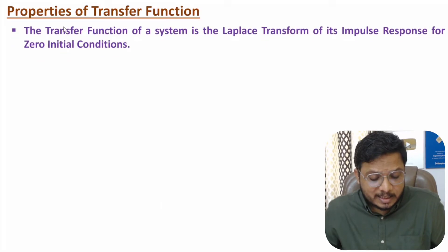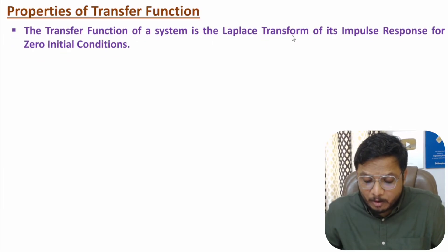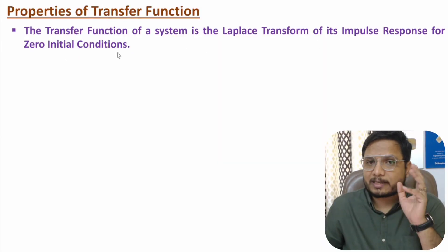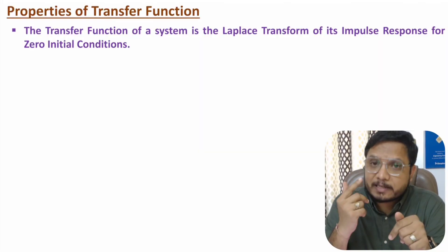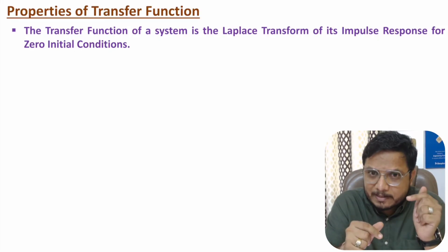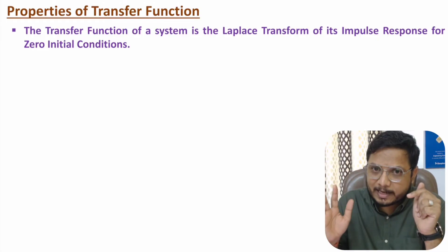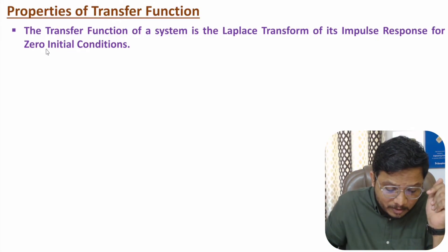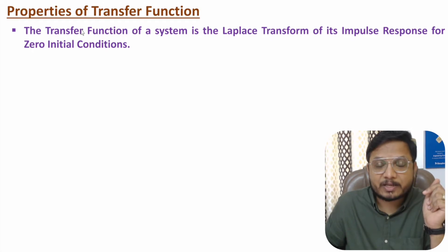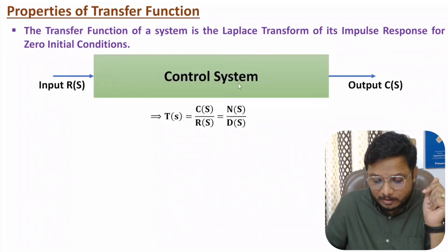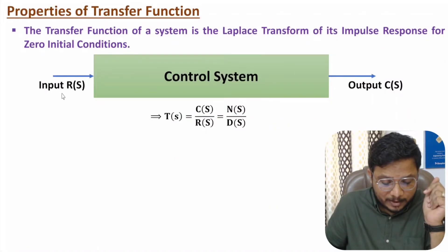The transfer function of a system is the Laplace transform of its impulse response for zero initial conditions. Transfer function is the Laplace transform of impulse response, where impulse response means the input is an impulse signal and we take the response at the output side. So considering zero initial conditions, if you give impulse input, the resulting response is the transfer function.